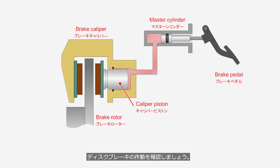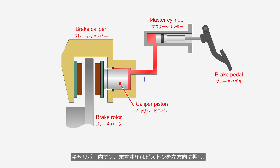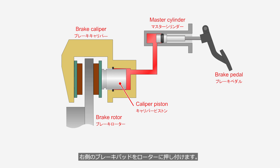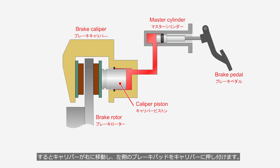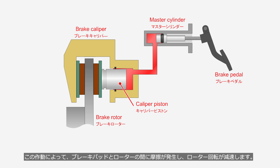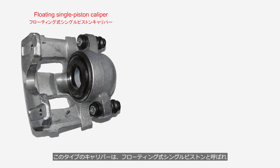When the driver depresses the brake pedal, hydraulic pressure is generated inside the master cylinder. Inside the caliper, the hydraulic pressure first pushes the piston to the left, pressing the right brake pad against the rotor. When the piston moves fully to the left, the hydraulic pressure pushes the caliper to the right. As the caliper moves to the right, it presses the left brake pad against the rotor, generating friction and slowing down the rotor rotation speed. This type of caliper is referred to as a floating single piston caliper, and is the most commonly used in passenger cars.